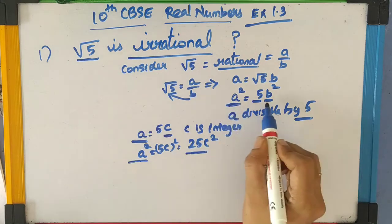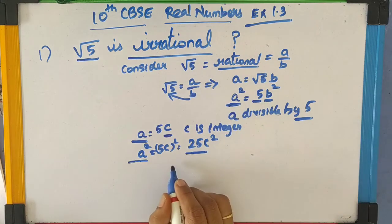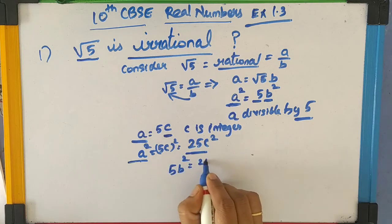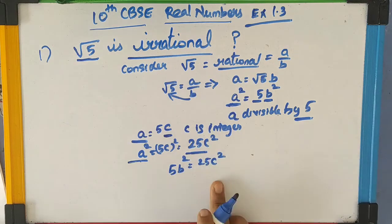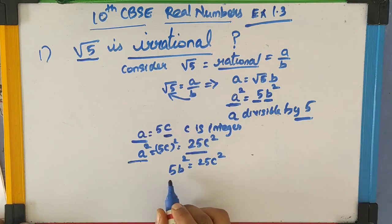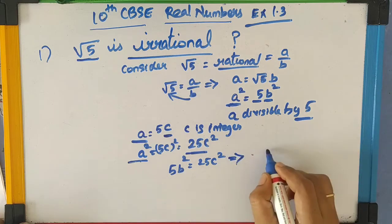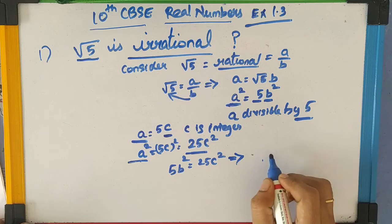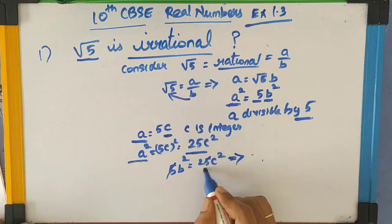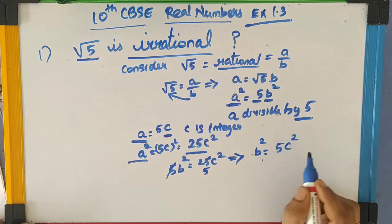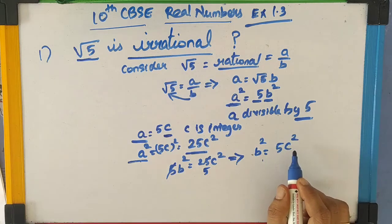Now, A squared equals 25C squared, and also A squared equals 5B squared. Therefore, 5B squared equals 25C squared, because both are equal to A squared. Dividing both sides by 5, we get B squared equals 5C squared. Now I am going to apply Theorem 3 again.